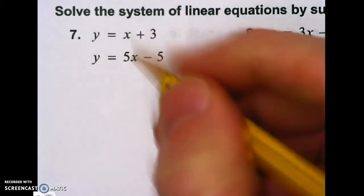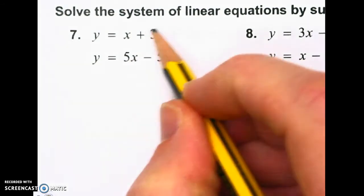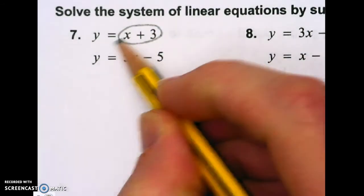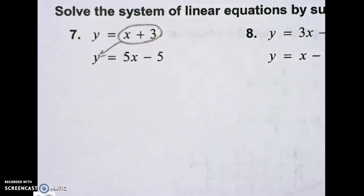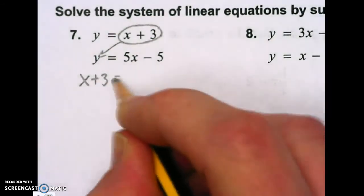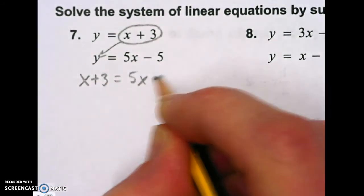You got this homework over the weekend. Hopefully this helped you. I'm going to take all of this stuff that's equal to y and I'm going to substitute it down here in y in the other equation and I'm going to rewrite it. Now I've got x plus 3 equals 5x minus 5.